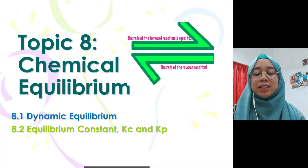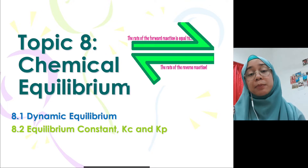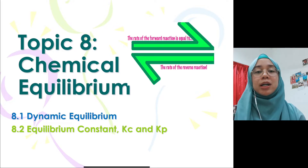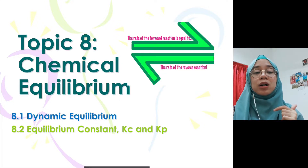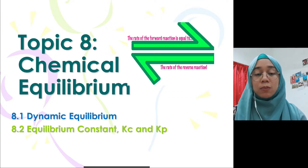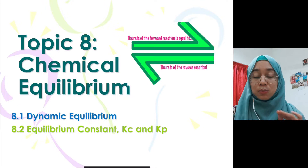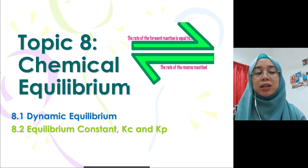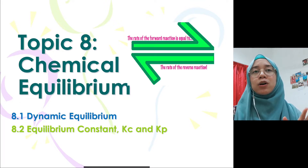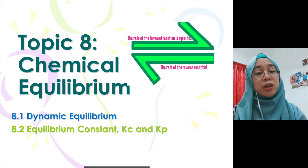Assalamualaikum and good day everyone. So we are into part 2 of 8.2 right now, equilibrium constant Kc and Kp. So previously in part 1, you have learned how to write the expression of Kc and Kp and then you also determined Kc and Kp based on the data given. The data given were quantities at equilibrium, and you were also asked to find partial pressure or concentration of species at equilibrium.